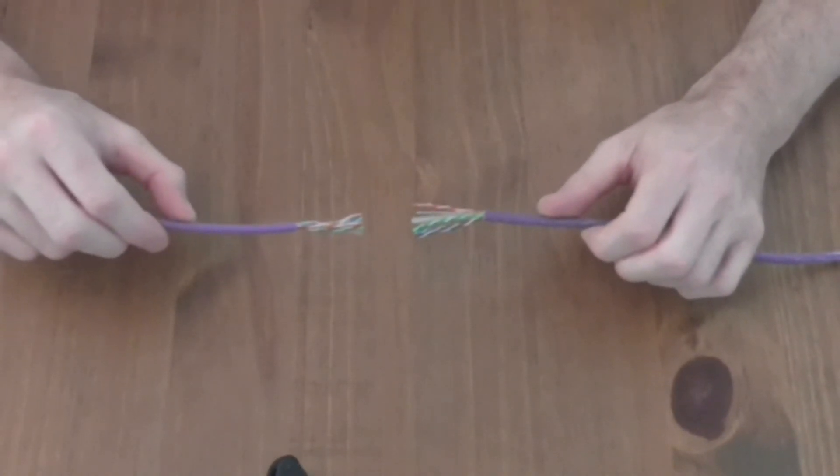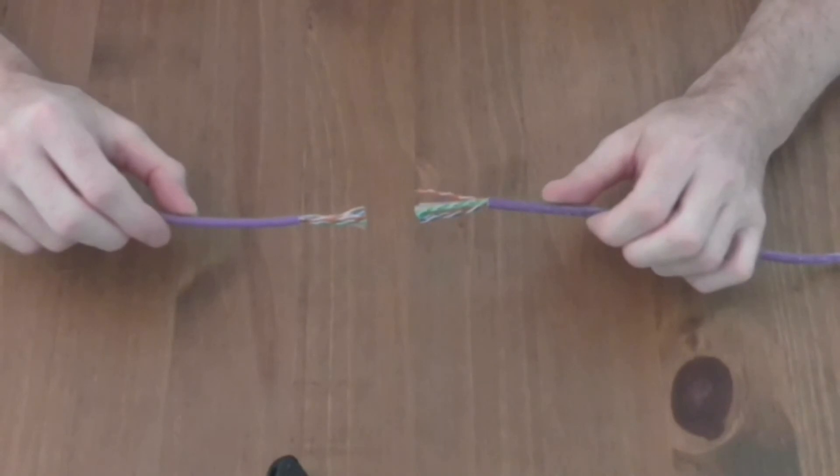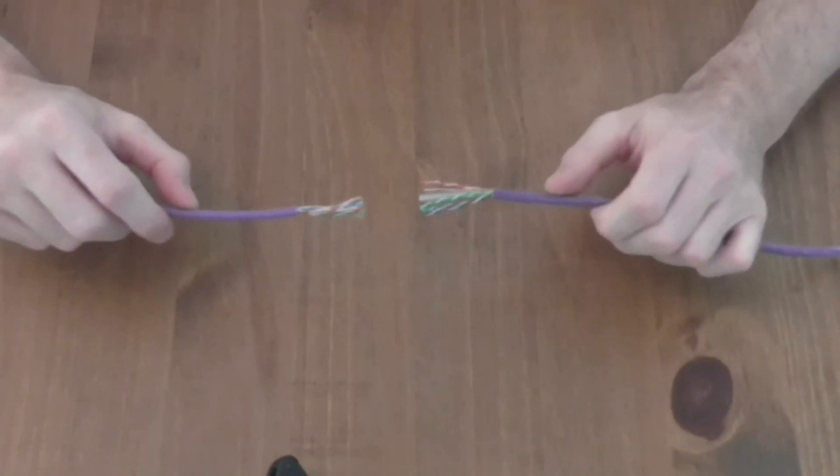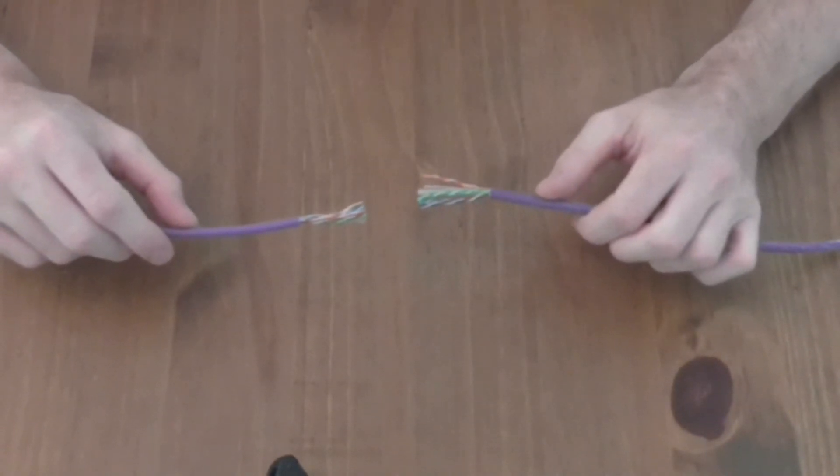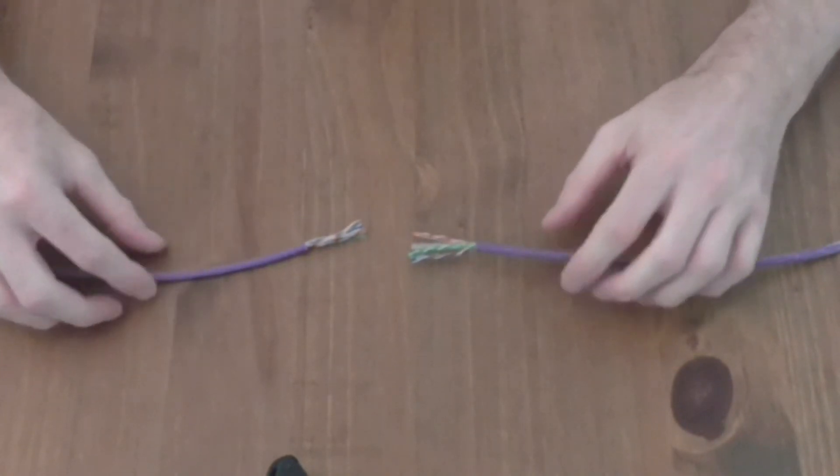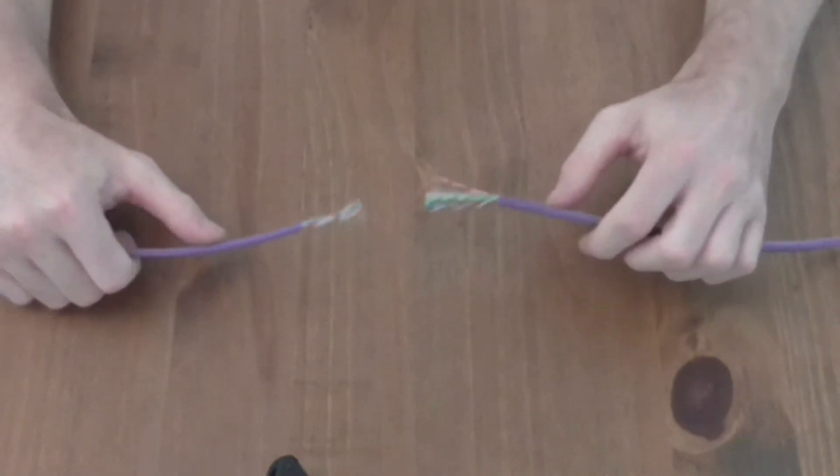So that's a quick summary on Cat5e and Cat6. I hope that this helps you understand the differences. I will also try and cover some other cables as well. I'll get some shielded Cat6, we can look at external Cat6 as well and try and understand what the difference is. But yeah, that's about it.